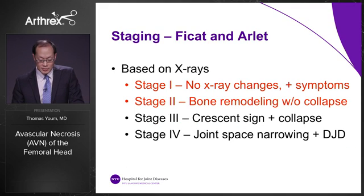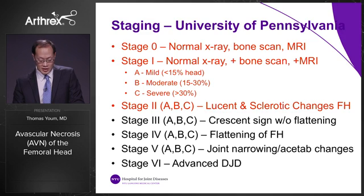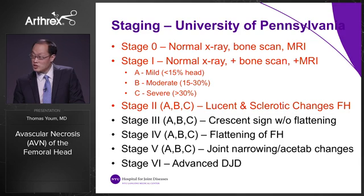There are various staging systems. One is described by FICAT and ARLET. I highlighted in red the important stages one and two, which represent pre-collapse of the femoral head — this is usually when femoral head core decompression is indicated. The University of Pennsylvania staging system has six stages, with stage six being the most advanced. I also highlighted in red stages zero to two, which are pre-collapse stages when core decompression may again be indicated.